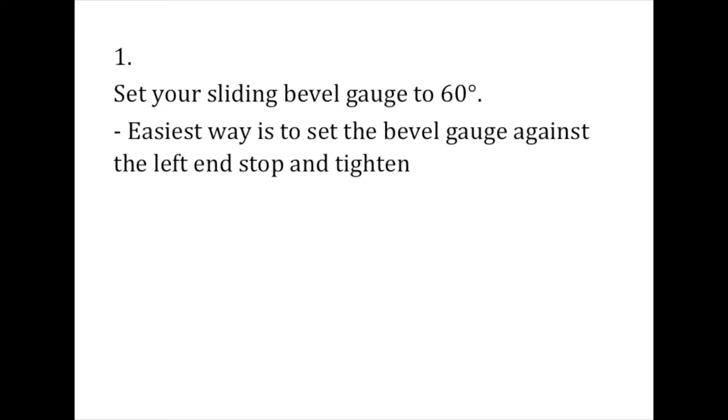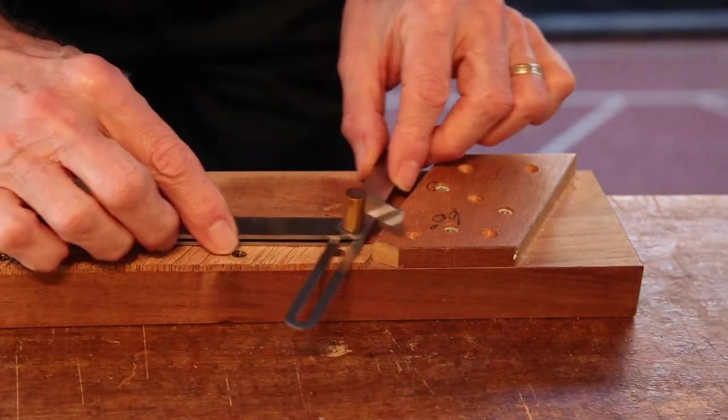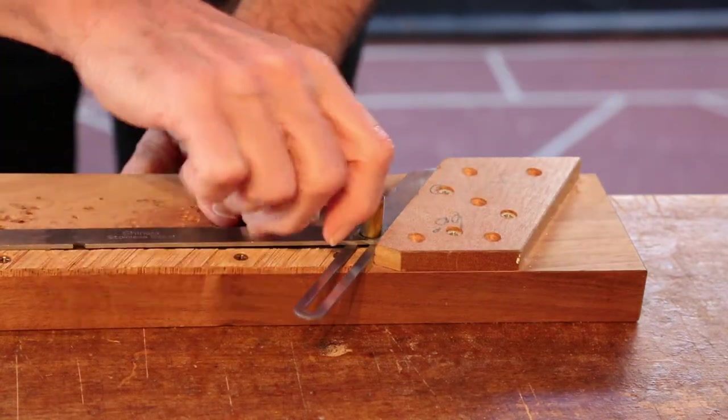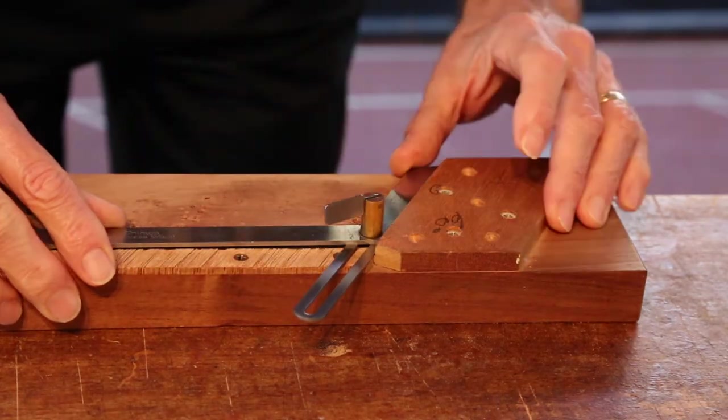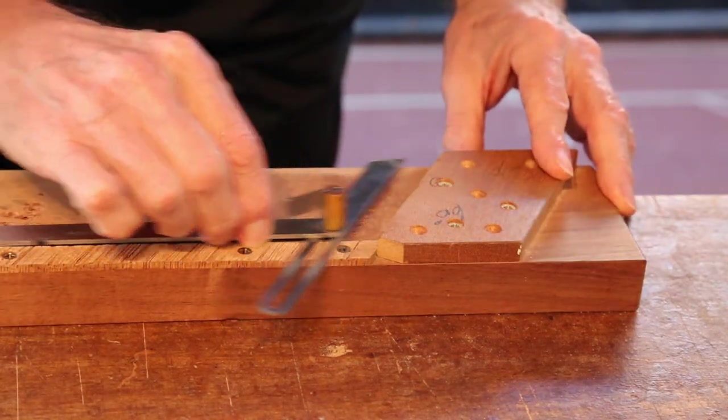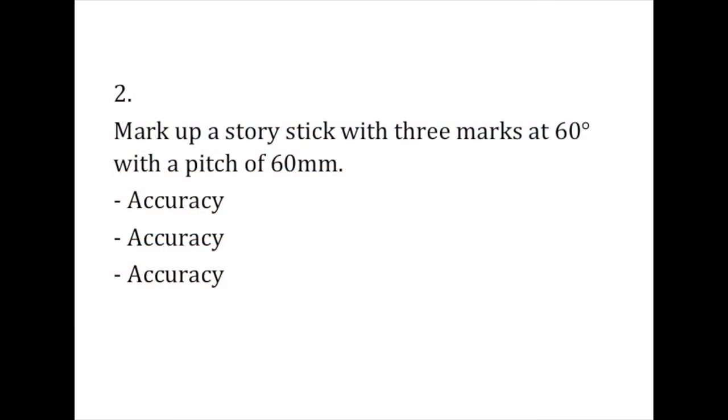So, first things first. Set the sliding bevel gauge to 60 degrees. The easiest way I've found is to set it against the left end stop and tighten. Provided your jig is accurate and the end stop is exactly 60 degrees, the bevel gauge will also be exactly 60 degrees. We only need three joints, so place three marks at 60mm intervals. Make sure the intervals are exactly the same.